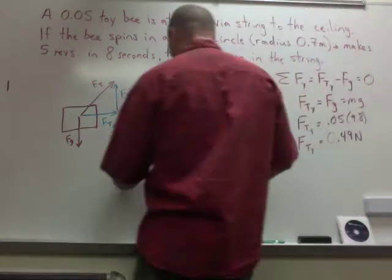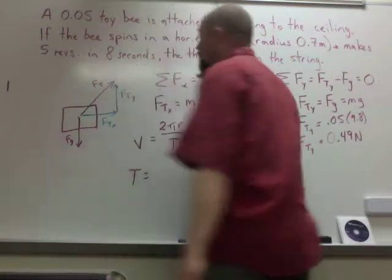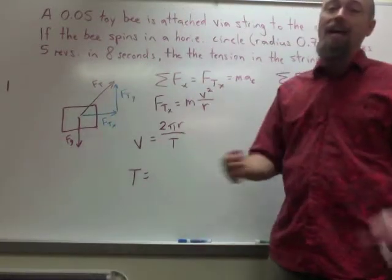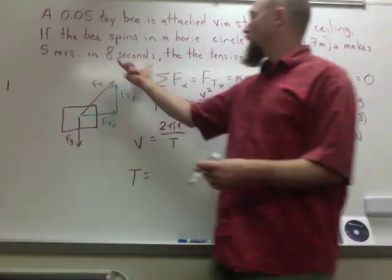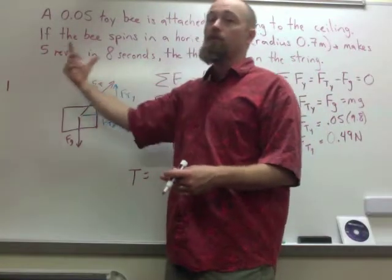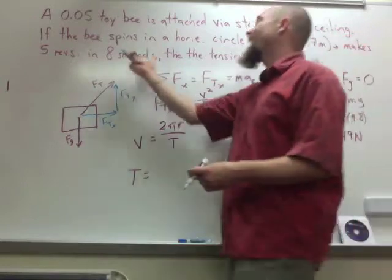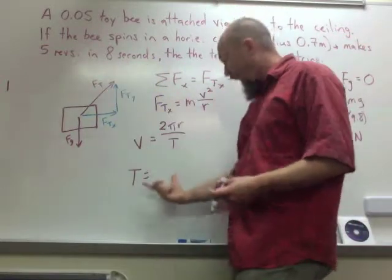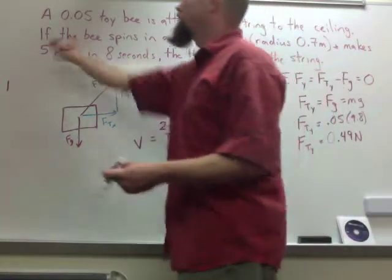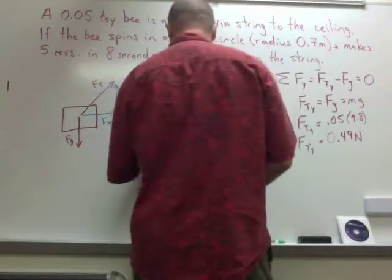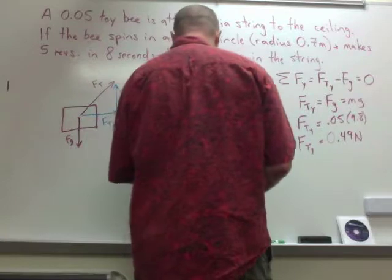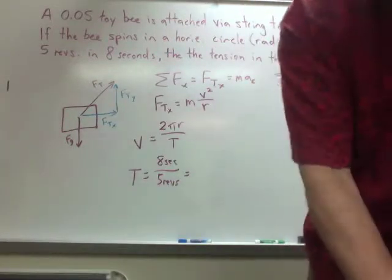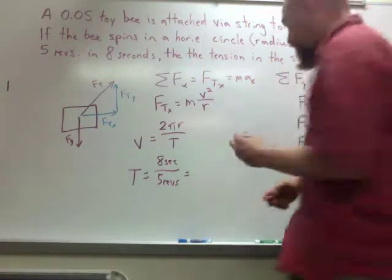Now, to solve for my period, I'm going to say, okay, well, period is the time that it takes to go around once. So, if I have 8 seconds and 5 revolutions, the time that it takes to go around once is going to be 8 seconds, because time, that's why seconds is on top, divided by 5. So, 8 seconds divided by 5 revolutions. And when you do that, 8 divided by 5, 1.6 seconds.